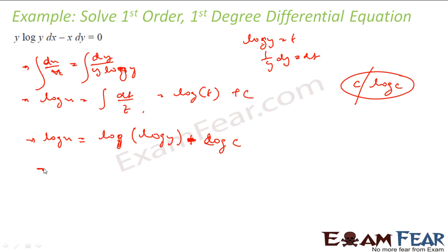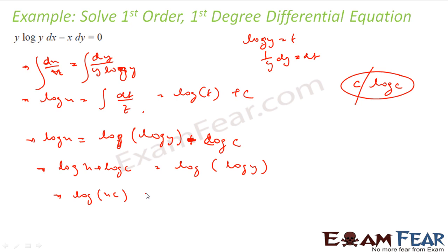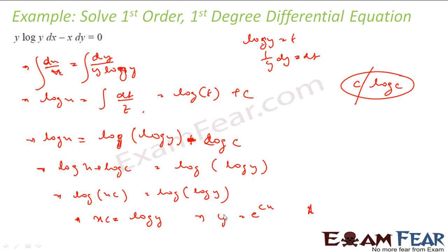So this becomes log x plus log c is equal to log(log y). Removing log from both sides, you get xc equal to log y, or y equal to e^(xc). This is a simplified version, but both forms are the same. You can take c, log c, plus c, minus log c — any of these, because all are constants.